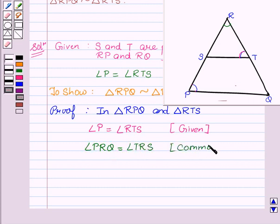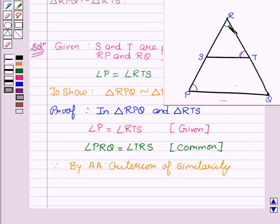This angle is common in both triangles RPQ and RTS. Therefore, by AA criteria of similarity, we know that if two angles of one triangle are respectively equal to two angles of another triangle, then the two triangles are similar.